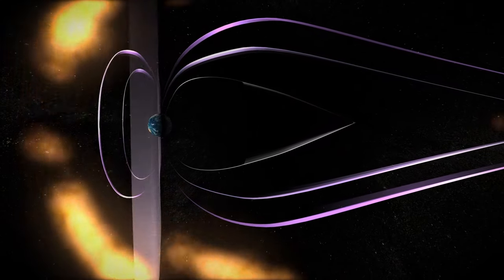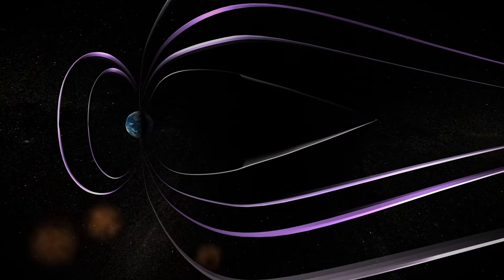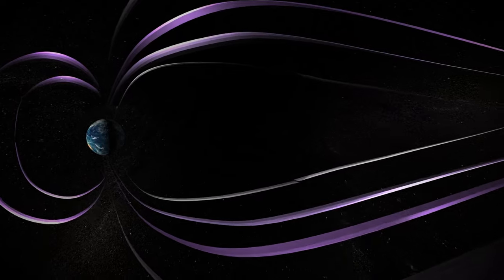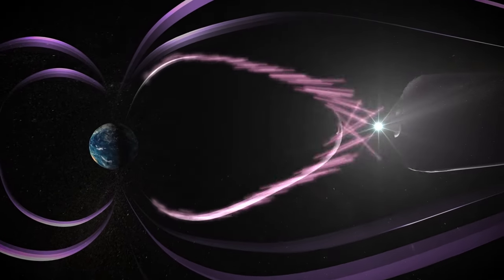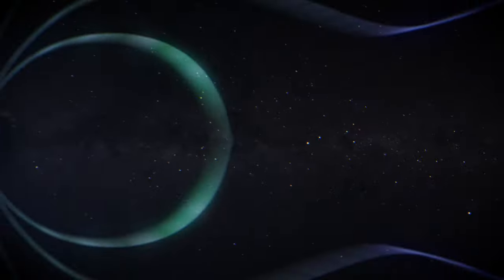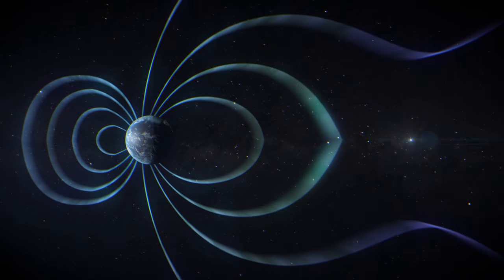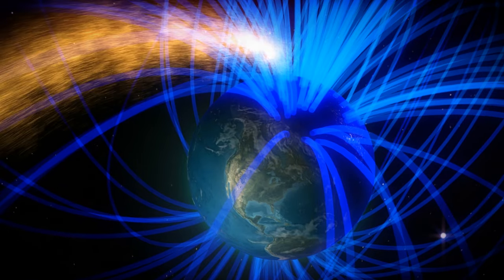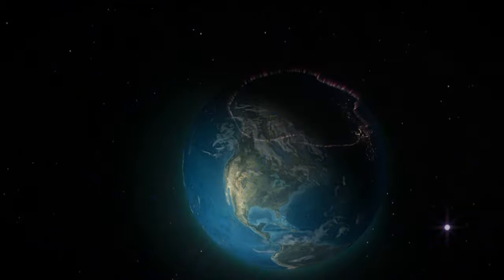Closer to home, magnetic reconnection between the Sun and Earth's magnetic fields is a critical way energy is transferred around our planet. For example, when magnetic reconnection occurs on the night side of Earth, it can push particles down toward the poles, triggering auroras.